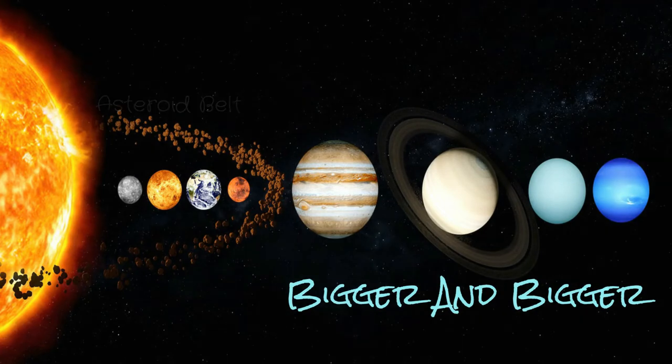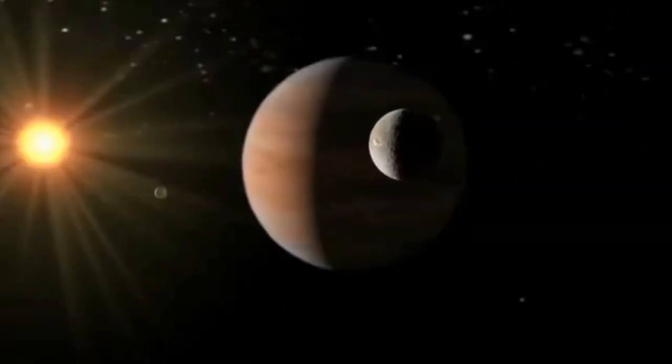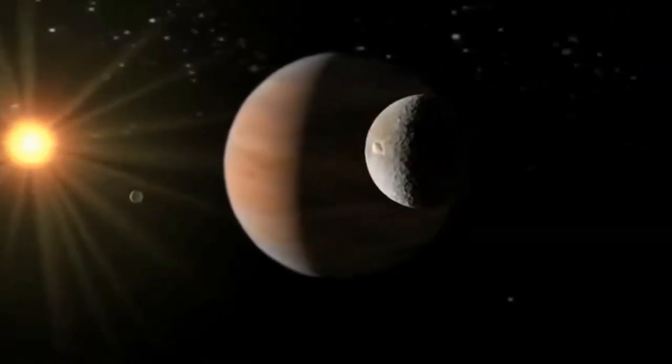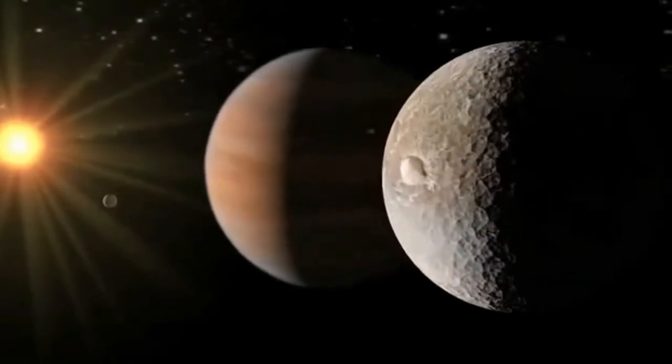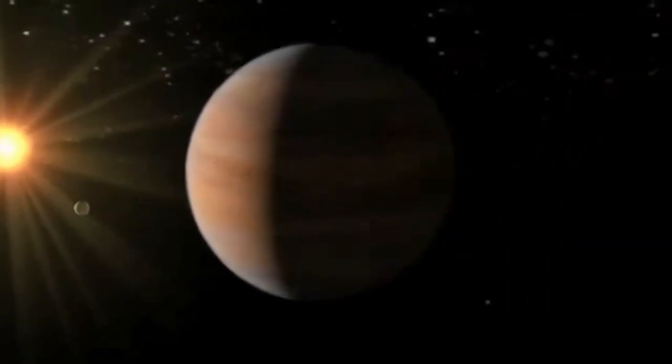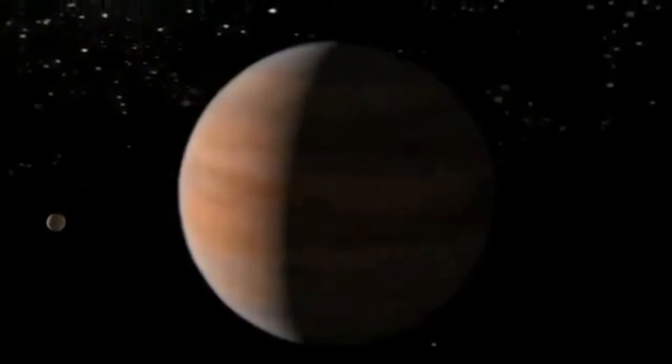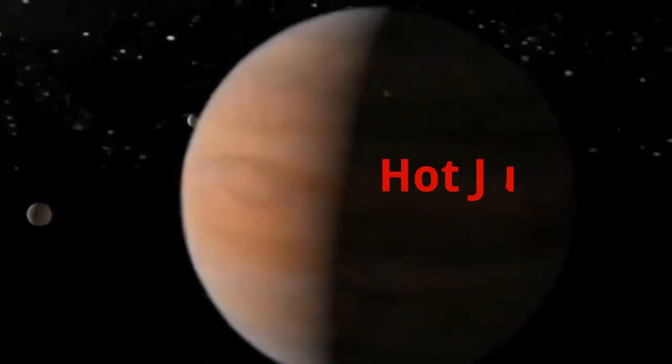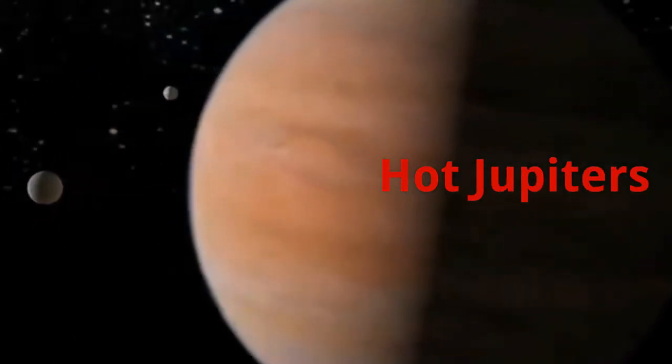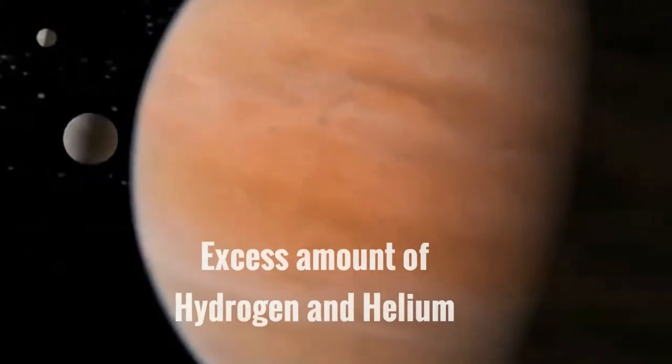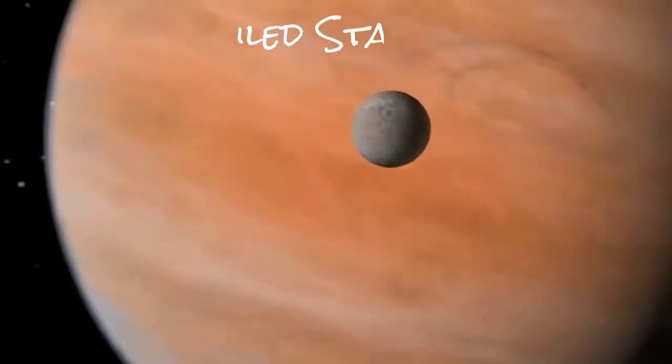On the opposite end of the spectrum, there are also planets that are equally big and so close to their stars that they orbit their stars in a matter of a couple of days. These are dubbed as hot Jupiters and have a rich preponderance of hydrogen and helium, which is why they are also referred to as failed stars.